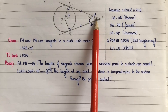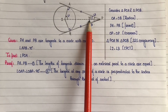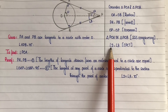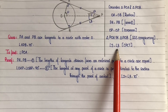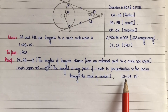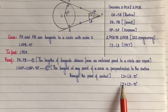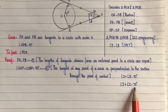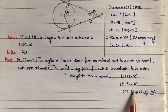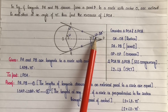Now it is easy to find the value of angle 2. We have angle 2 plus angle 3 equal to 70 degrees. Since we proved angle 2 equals angle 3, substituting gives angle 2 plus angle 2 equals 70 degrees, so 2 times angle 2 equals 70 degrees, therefore angle 2 equals 35 degrees.